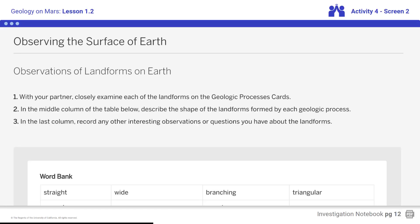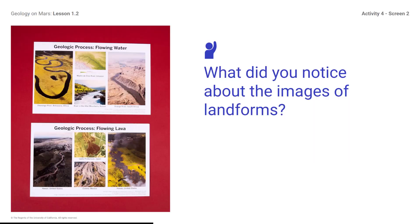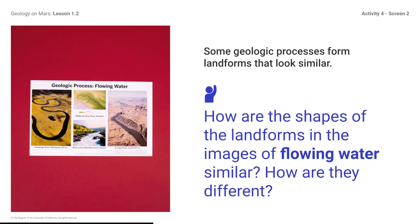Complete this step of the lesson. What did you notice about the images of landforms? How are the shapes of the landforms and the images of flowing water similar? How are they different? You might mention that some of the landforms were curved, and some were branching, or were less straight and less wide than the ones formed by lava.